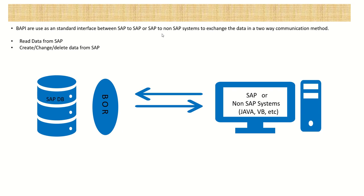BAPIs are used as a standard interface between SAP to SAP, or SAP to non-SAP systems, to exchange data in a two-way communication method. With the help of BAPI we can read the data from SAP as well as create, change, or delete data from the SAP system. The SAP data is accessed through BOR - that is Business Object Repository.